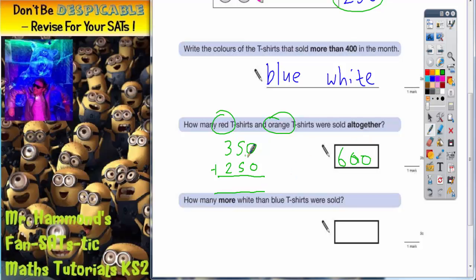Let's just double check. 0 plus 0 is 0. 5 plus 5 is 10, carry the 1. 3 plus 2 plus 1 is 6. So it is indeed 600.